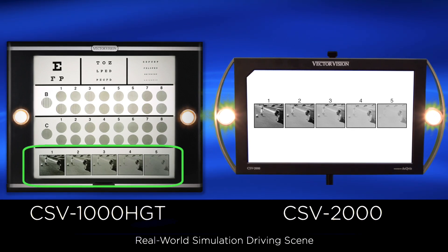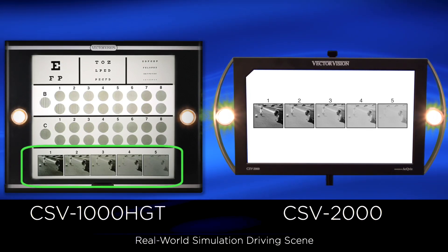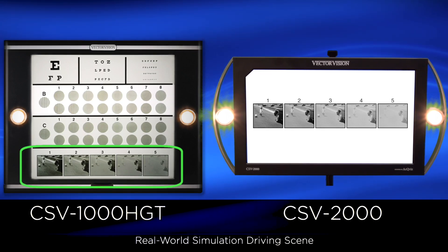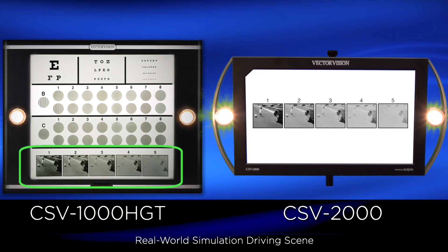We also recommend for your cataract patients the real-world driving scene test. This test is offered on both the CSV 1000 and CSV 2000. It presents a range of low-contrast street images that allow not only the cataract patients but also their relatives to fully understand the impact of real-world vision loss in a typical driving situation.